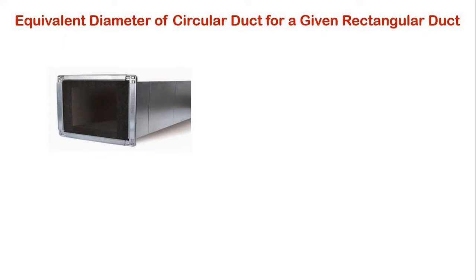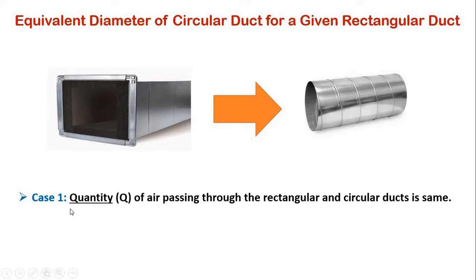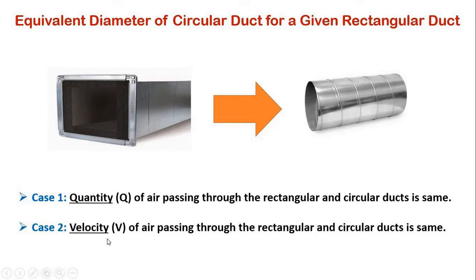In order to find the equivalent diameter of circular duct for a given rectangular duct for the same pressure loss per unit length, we shall consider two cases. The first case is where the quantity of air passing through the rectangular and circular ducts is the same, and the second case is where the velocity V of air passing through the rectangular duct and circular duct is the same.